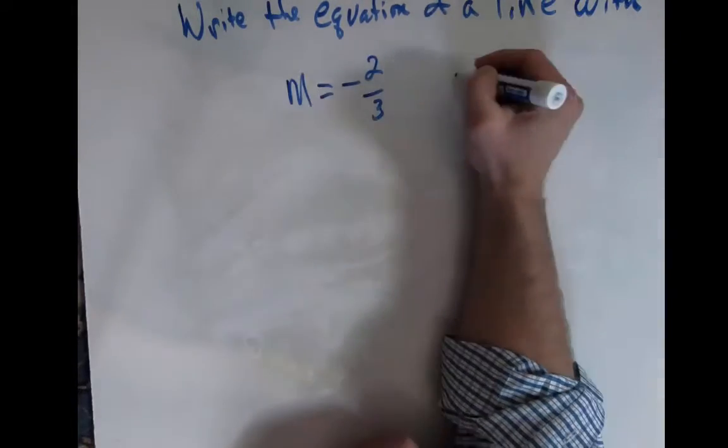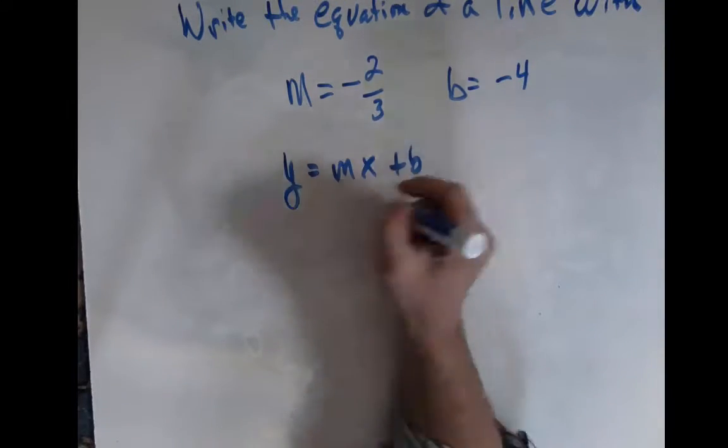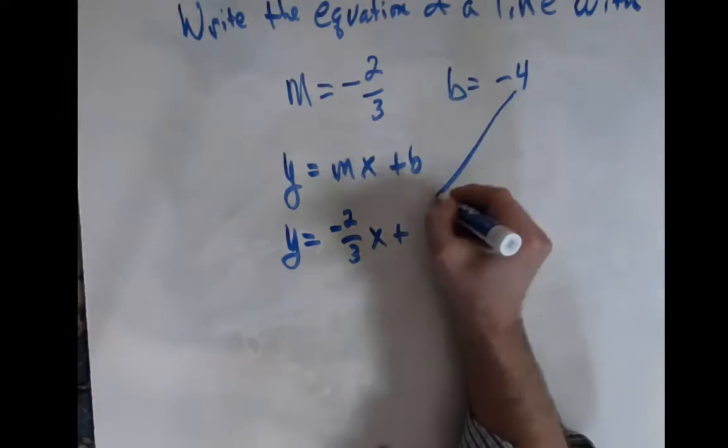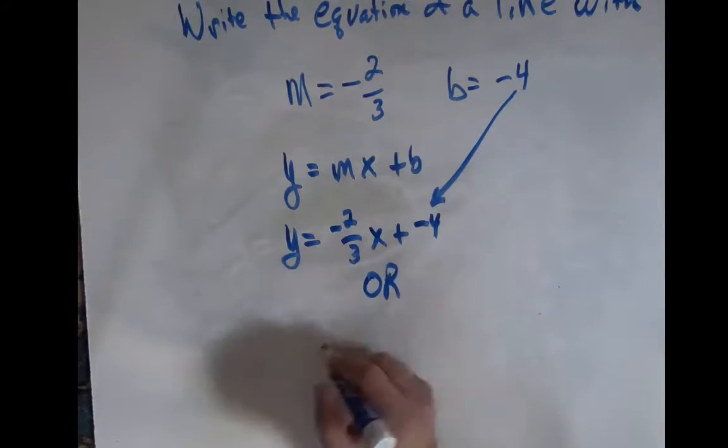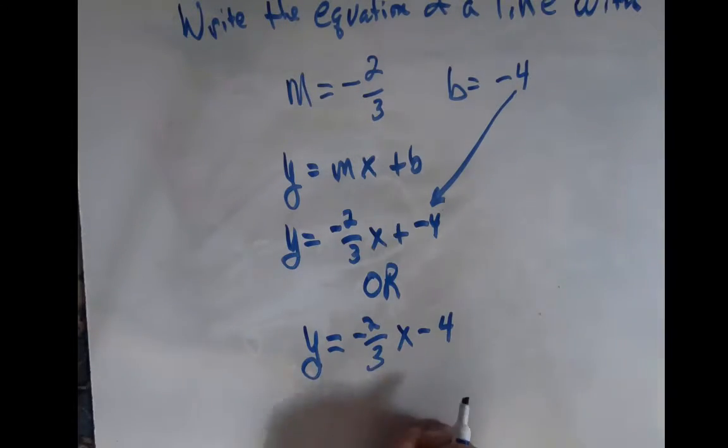We struggle a little bit with negative numbers so let's try one that has some negatives in it. So y equals mx plus b, so y equals negative 2 thirds x plus a negative 4. Well, what's plus a negative 4? That is the same as minus 4.